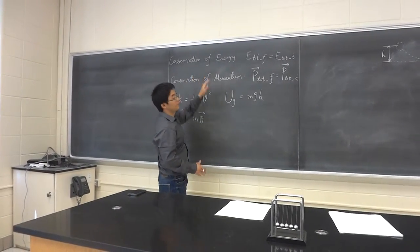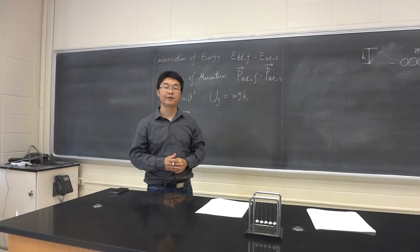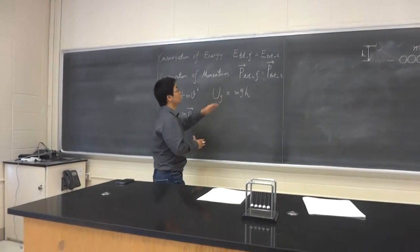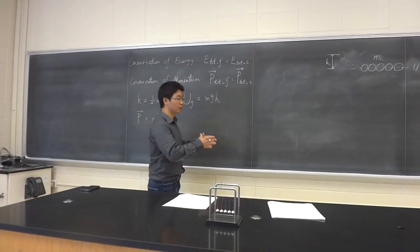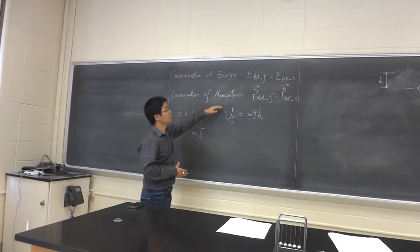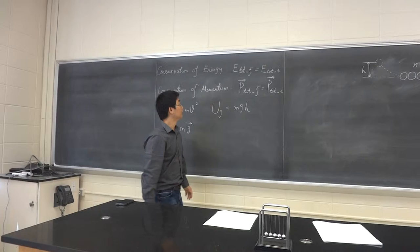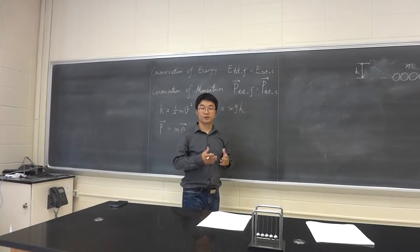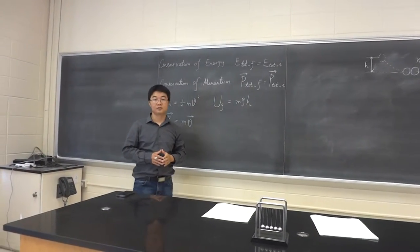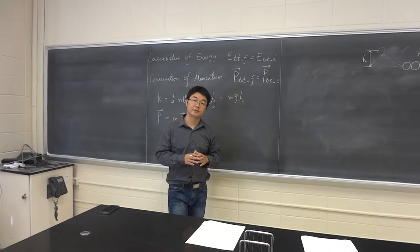So let's first review these two conservation laws briefly. The conservation of energy tells us that if a system is isolated — that is, there is no energy transfer between the system and the environment — then the total energy of the system should be conserved. That means if we choose a final state and an initial state, the total energy in this system should be a constant. Similarly, the conservation of momentum tells us that if a system is isolated, there is no momentum transfer between the system and the environment, so the total momentum in the system should be a constant. I want to emphasize that energy is a scalar, but momentum is a vector, meaning momentum has three directions.